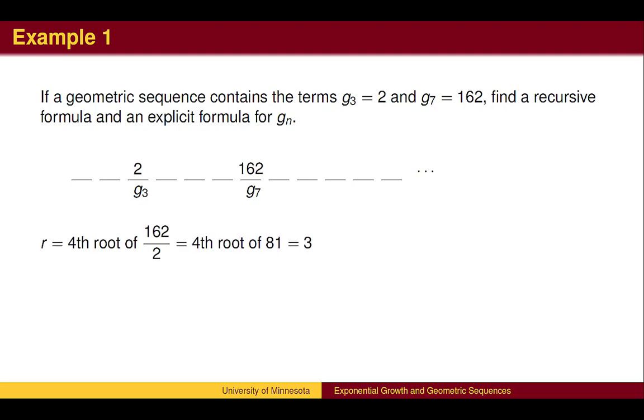The common symbol for the common ratio is the letter r. Now that we have the common ratio, we can start filling in other terms, beginning at 2 and multiplying by 3 each step to the right. We can divide by 3 as we go to the left. g sub 1 is 2 ninths.